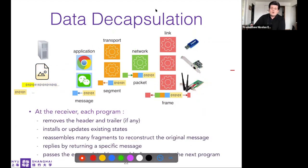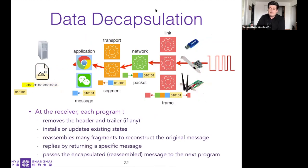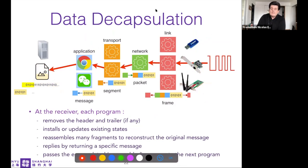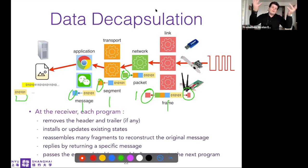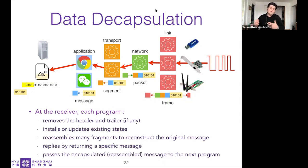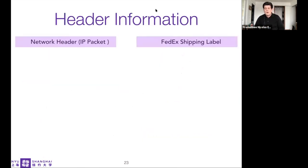At the destination, the same sequence happens in reverse order: each header and trailer is removed. Removing the header means reading the data inside it and checking things. The pieces are then reassembled until the file is available and presented to the user through their browser, for example.